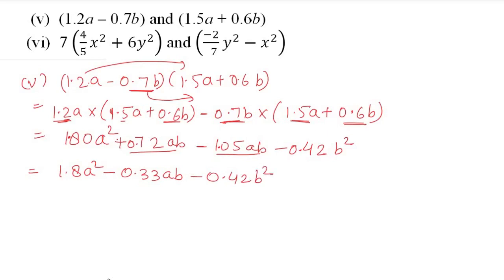For the sixth part, we need to simplify first by multiplying 7 into the first bracket before doing the product. So 7 × (4/5)x² = 28/5 x², and 7 × 6y² = 42y².